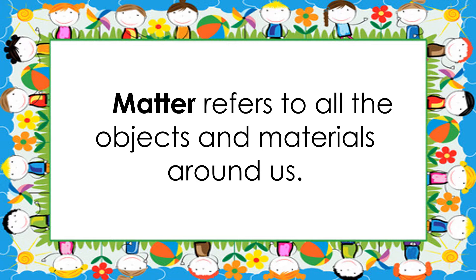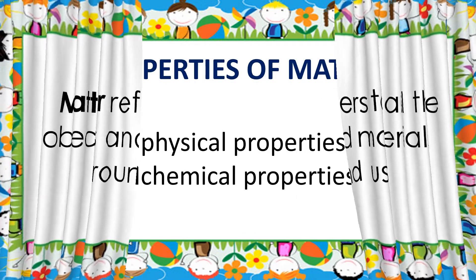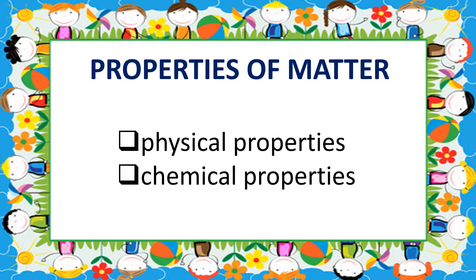Matter refers to all the objects and materials around us. In studying its different kinds, we usually observe and compare each one material to another. For example, when we describe the difference between a paper and rock, we usually look for characteristics that are not similar in the two objects being described. These characteristics that make matter distinct from one another are called properties. The properties of matter can be classified as physical properties or chemical properties.